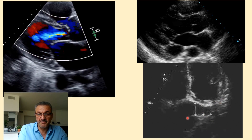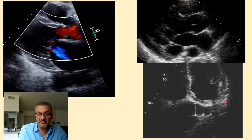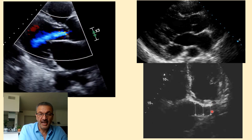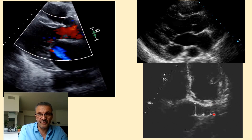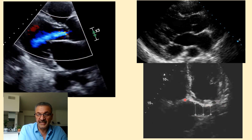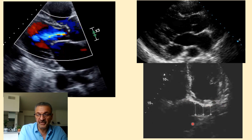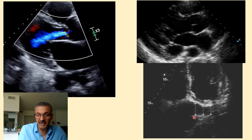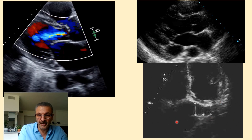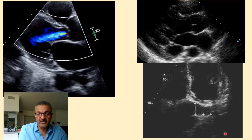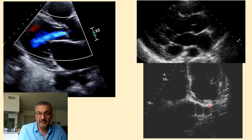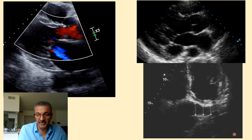Here, as you notice, this is the basal four-chamber view. From a typical apical four-chamber view, you just fan down, and suddenly you will see at the level of the atrioventricular junction a wedge-shaped structure that opens into the right atrium. This is your coronary sinus in the basal apical four-chamber view.